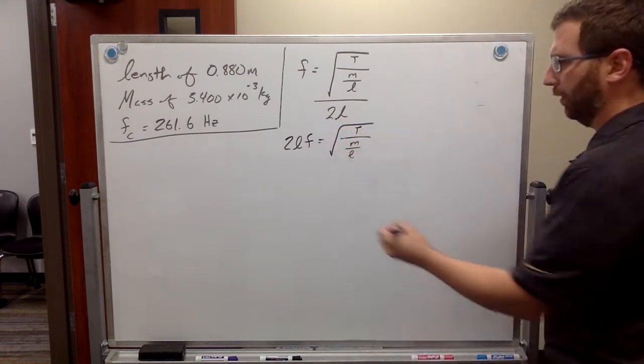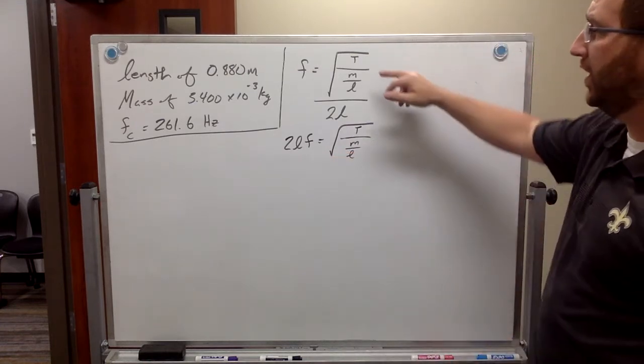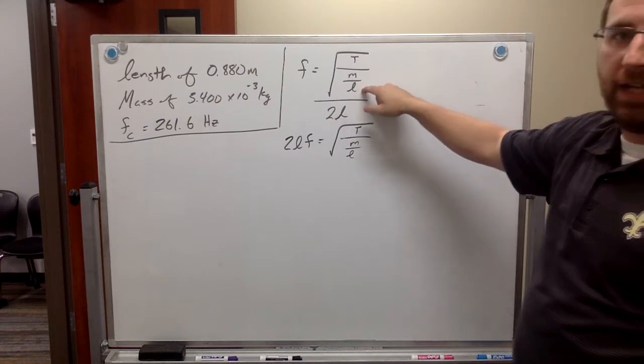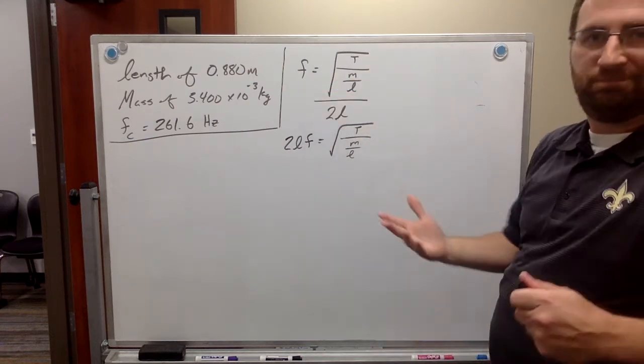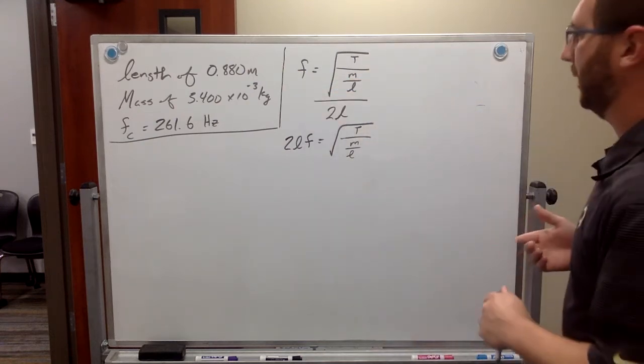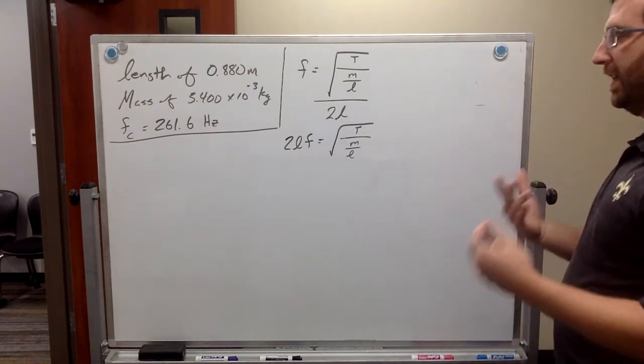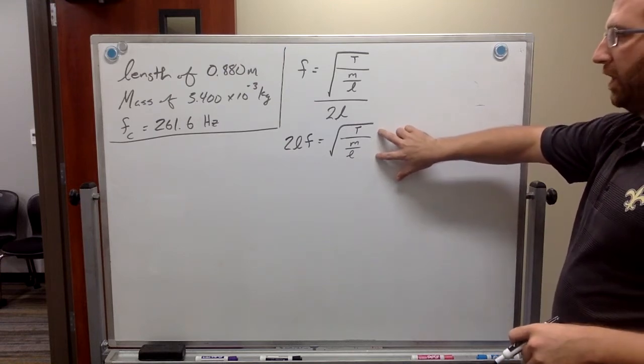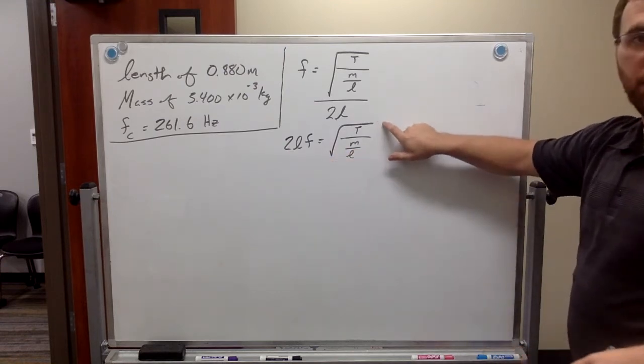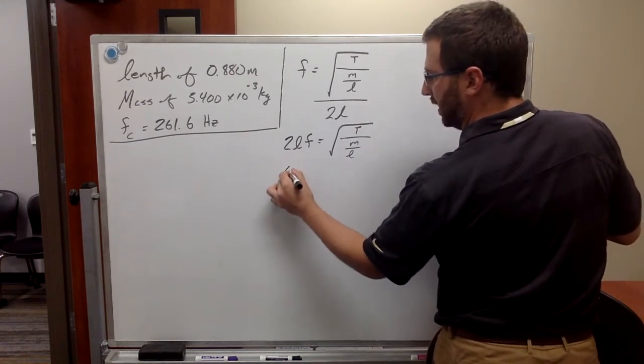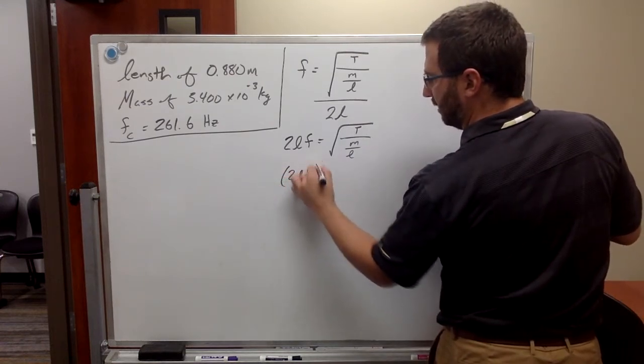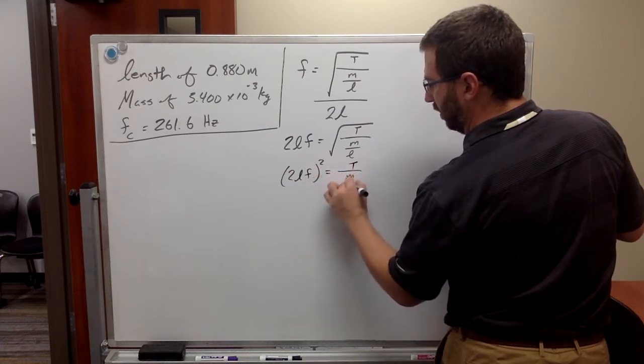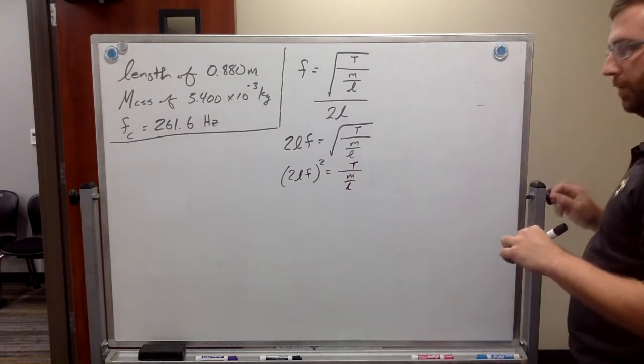Let me kind of throw this out here. In our equation, T is your tension, M is your mass, L is your length, and F is your frequency. Might need to be important. So, yet again, we're still solving for T. We've got to get the tension by itself. So, let's unravel this. We're going to square both sides of our equation, because that's what gets rid of a square root. So, if we square both sides, then we get 2LF squared equals tension over mass over length.